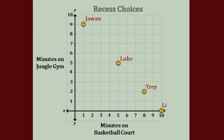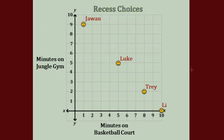Let's keep thinking about this a different way. How about Luke? How did Luke use his recess time? I see him right here in the center and he's at (5, 5). So his ordered pair looks like that, and what does that mean for him? It means that he spent five minutes playing basketball and five minutes on the jungle gym. You could even write a story off of this — it could be a great story prompt to explain why these students used those minutes like they did.